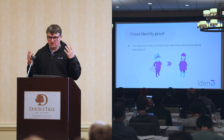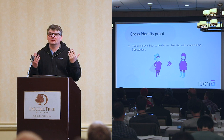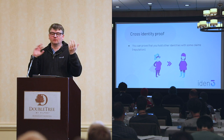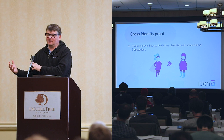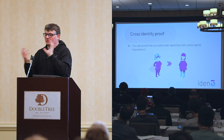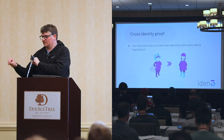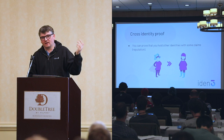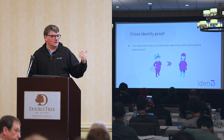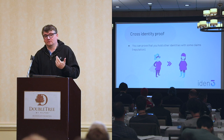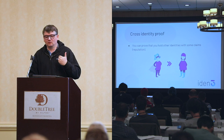Another interesting use case is cross-identity proofs. The idea is that I can have two identities — one real and one pseudonymous — and I don't want them linked. But there may be a service that says you can use a pseudonymous identity as long as you can prove you have at least one real identity. Using zero knowledge, without revealing which is your real identity, you can prove that this pseudonymous identity is linked to exactly one real identity. This uses the concept of a nullifier, ensuring you can only create one specific pseudonymous identity. This solves a lot of problems, for example for Sybil attack prevention.